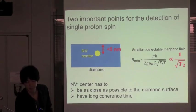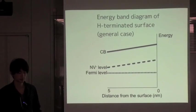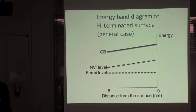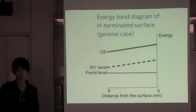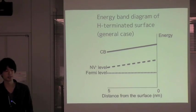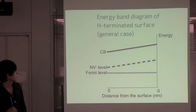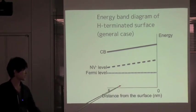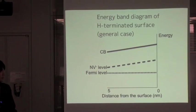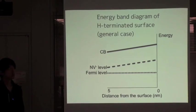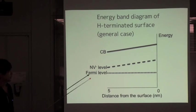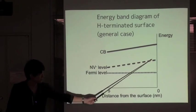However, there is a fundamental problem. This is energy band diagram of hydrogen terminated diamond surface. As grown diamond surface is terminated by hydrogen. Horizontal axis is the distance from the surface. In H-terminated diamond surface, NV minus level bends up near the surface.